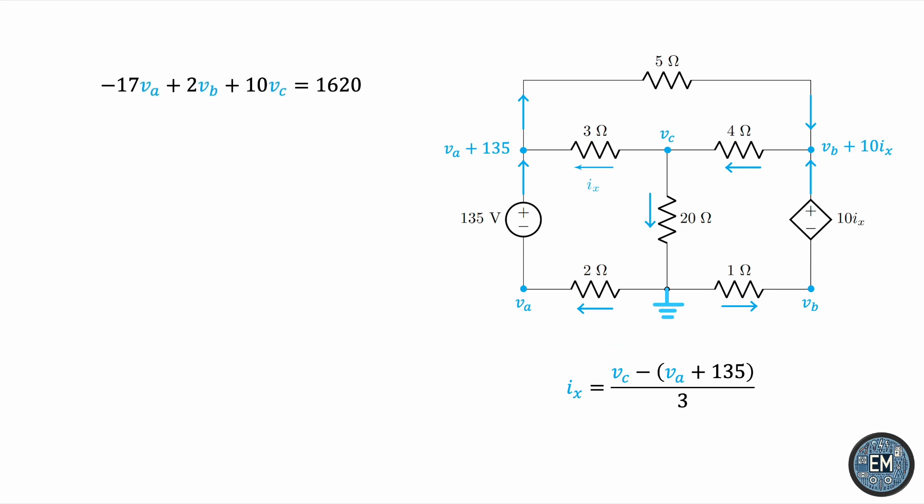Let's now repeat the process for this node. We have this current entering. Again, we can get it by using 0 minus VB over 1. And then, there's also this current entering, and it was that current leaving node A, if you remember. Here, the one going through the 5-ohm resistor. These must add up to the current going through the 4-ohm resistor, which is VB plus 10IX minus VC over 4.